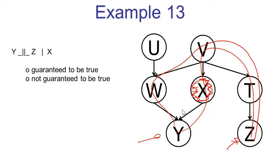We're asked about w and z where v is observed. There is the path w, v, t, z. I'm going to first check the triple w, v, t — that's a common cause with the middle node observed, so that's an inactive triple, making the entire path inactive. Here's another path, w, y, x, v, t, z. I'll check the triple x, v, t — common cause with the middle node observed, so the triple is inactive, making the entire path inactive. We checked both paths; both are inactive, so the independence is guaranteed to be true.